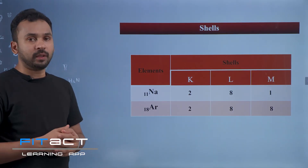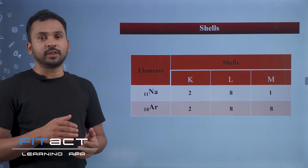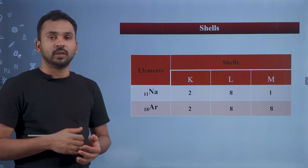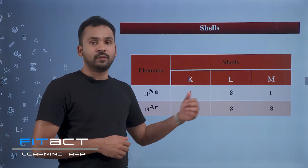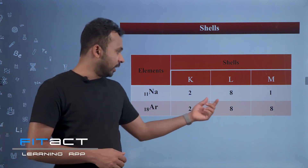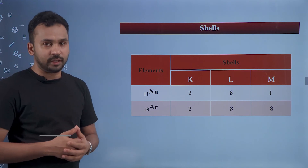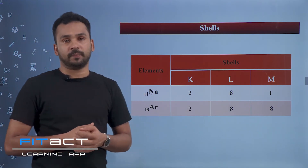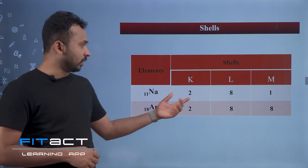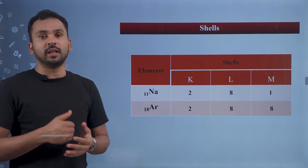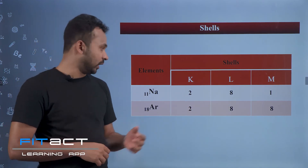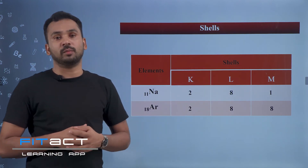For argon, the atomic number is 18, so argon has 18 electrons. 2 electrons fill the K-shell, 8 electrons fill the L-shell (maximum 8), and 8 electrons fill the M-shell. So the electronic configuration of argon is 2, 8, 8. The electrons fill the K-shell, L-shell, M-shell, and N-shell in order.